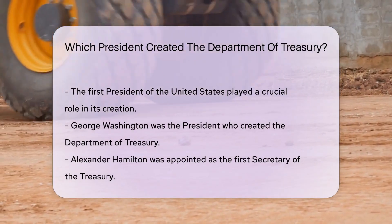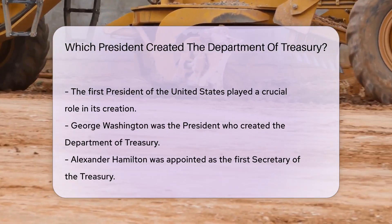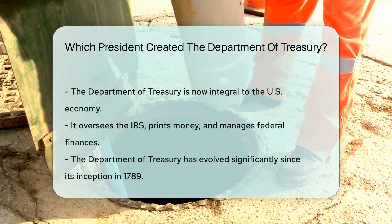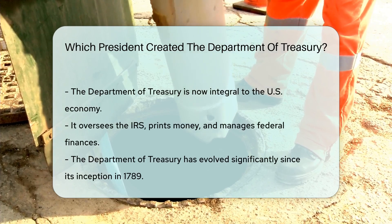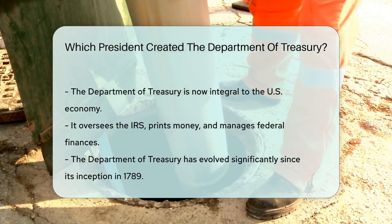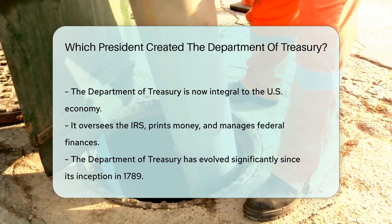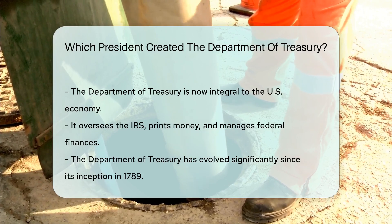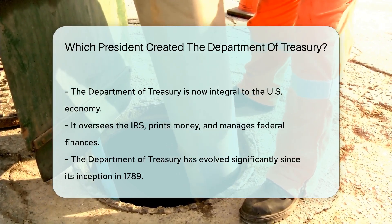Now, the moment you've been waiting for. The president who created the Department of Treasury was George Washington. His appointment of Alexander Hamilton as the first Secretary of Treasury was a defining moment.